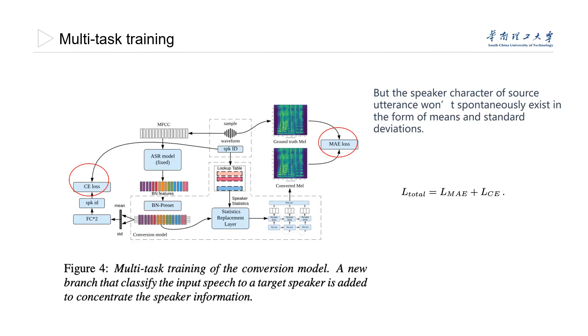During training, the overall loss is the sum of the mean absolute error loss and the speaker classification cross-entropy loss.